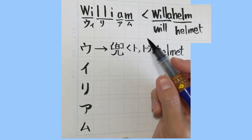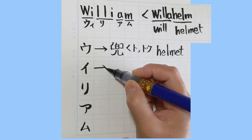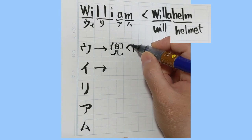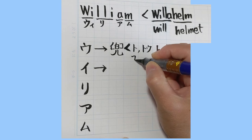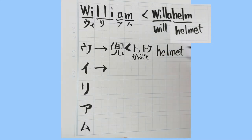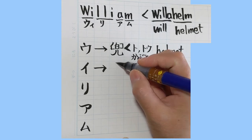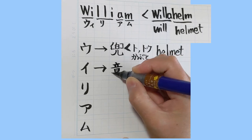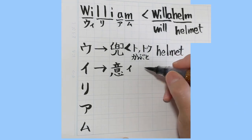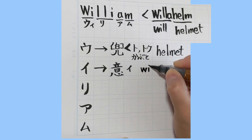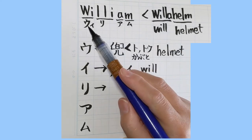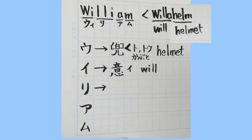Helmet — so I put that kanji there. The meaning of helmet is just as written in the latter part. Japanese warriors wear this kabuto — it's also read as kabuto in Japanese. And for the イ sound, I put this one. This means 'will.' Okay, great.